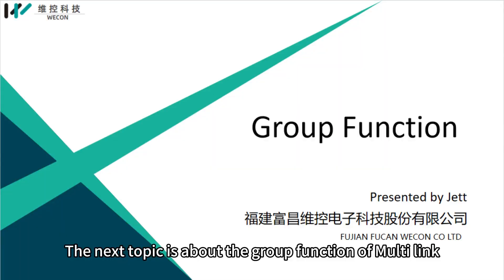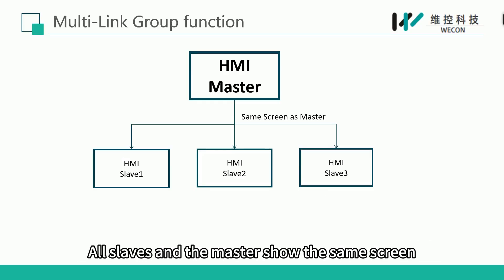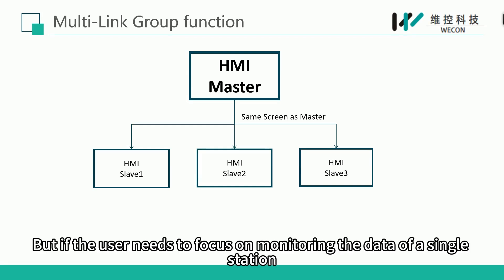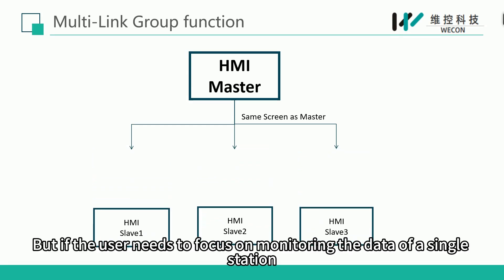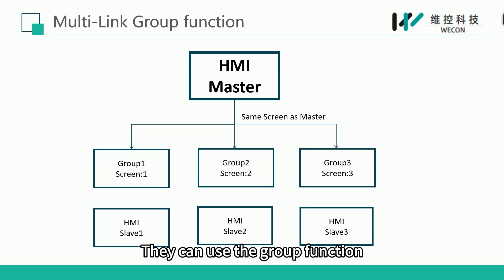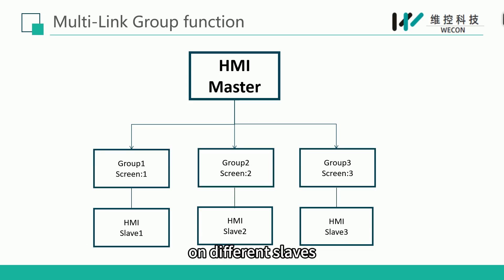The next topic is about the group function of multi-link. In a normal multi-link setup, all slaves and the master share the same screen. But if the user needs to focus on monitoring the data of a single station, they can use the group function. This allows users to view different screens of the master on different slaves.